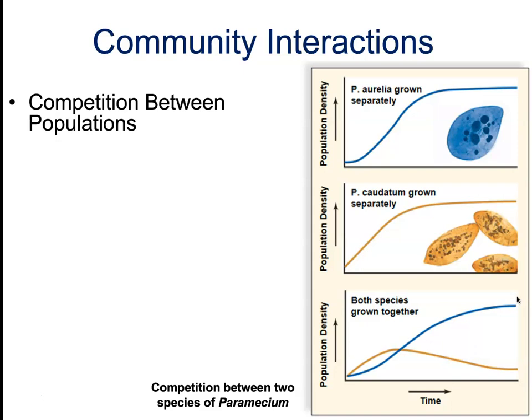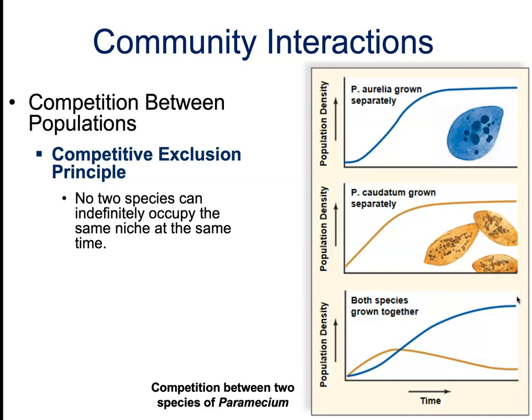From this and other similar experiments, we came up with the competitive exclusion principle, which states that no two species can indefinitely occupy the same niche at the same time. The two species of paramecium could coexist in the same tube only if one fed on food at the bottom while the other fed at the top — they couldn't both be suspended throughout the entire test tube and both effectively survive. One is going to out-compete the other for resources.